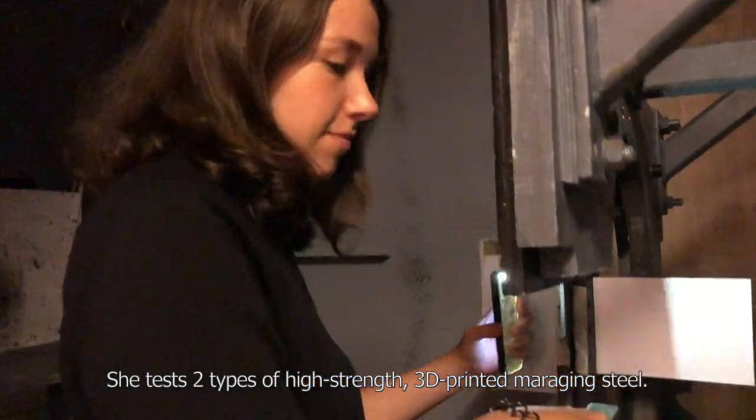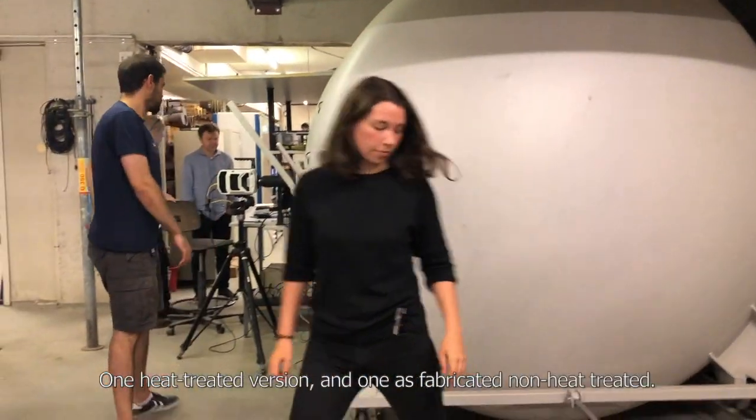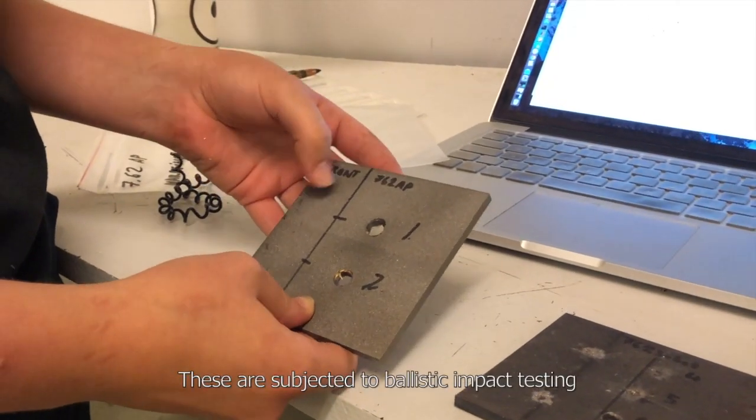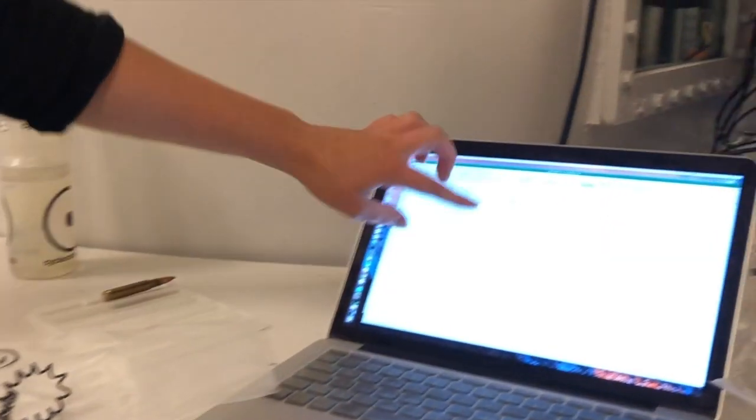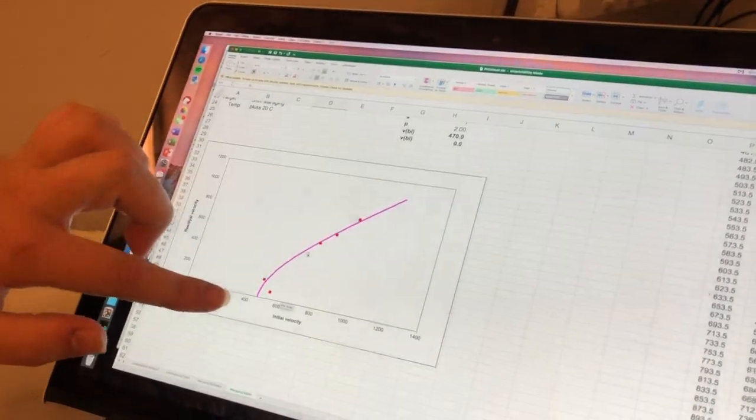We're testing some high-strength 3D printed maraging steel. We're testing a heat-treated version of the steel and a non-heat-treated, as-fabricated version. And we're doing ballistic impact testing to try and fit this ballistic limit velocity curve to when the bullet is stopped or destroyed by the plate.